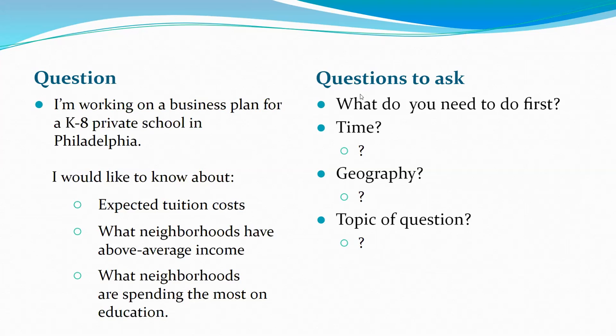Linda uses the five W's and H: who, what, when, where, why, and how. Another real example: a student starting a private school in Philadelphia needs time period and geographic breakdown (zip code, census tracts, or block groups). Note that tuition costs and consumer spending are not census data - that's Bureau of Labor Statistics data, available through marketing library databases.